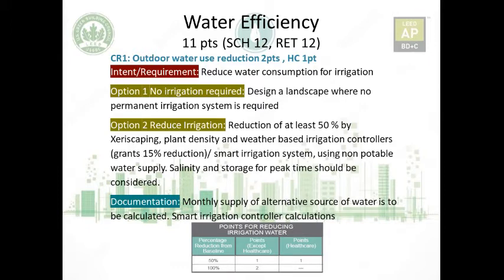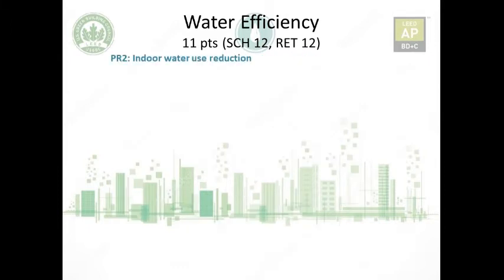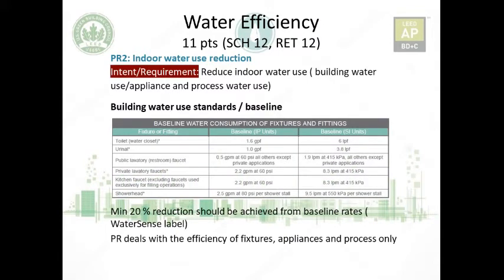For healthcare, the maximum is one point. Prerequisite two: indoor water use reduction. The intent is to reduce indoor water use. Building water use includes toilets, urinals, lavatories, etc. Appliance water use includes dishwashers, laundry equipment, etc. Process water use could include cooling towers, etc.